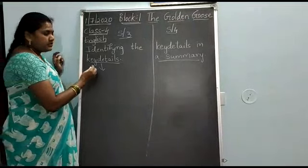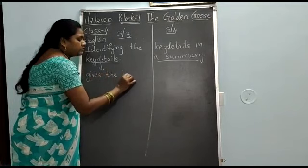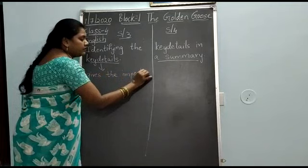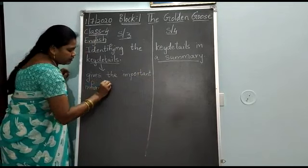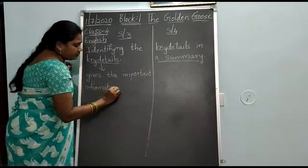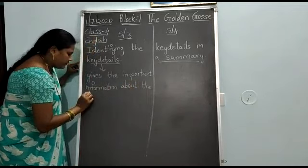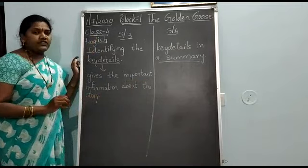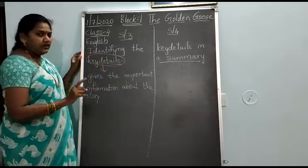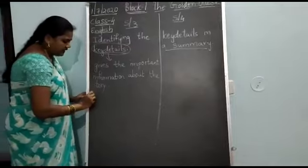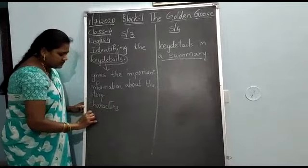Key details means it gives you the important information about the story. So if any important thing is there, that is called as a key detail. For every story, as I told you in the previous class, we will have the characters and settings.